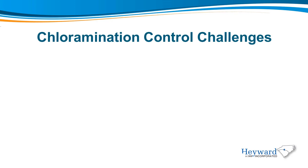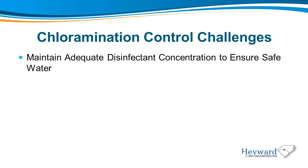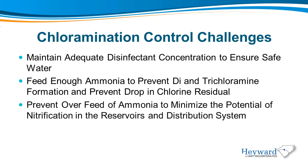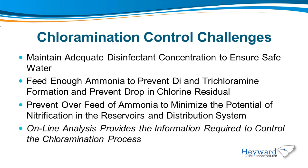Chloramination control challenges: To maintain adequate disinfection concentration to ensure safe water, feed enough ammonia to prevent dichloramine and trichloramine formation and prevent drop in chlorine residual. Prevent overfeed of ammonia to minimize the potential of nitrification in the reservoirs and distribution system. Online analysis provides the information required to control the chloramination process.